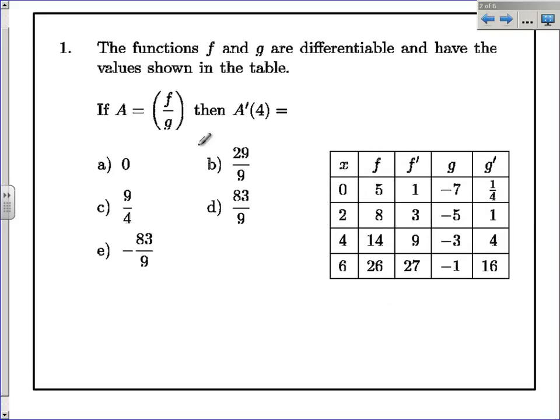Here I've got a function a that is a quotient of f and g, and I want to find a prime at 4. So let's go ahead and do the formula. The formula is g f prime low d high minus high d low f g prime all over g squared. This is how I find the derivative of that quotient.